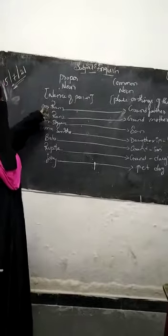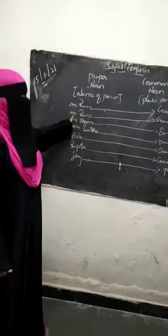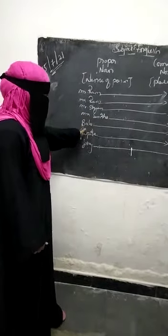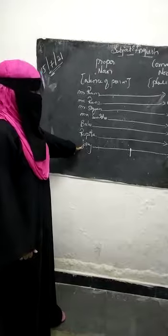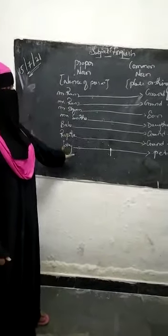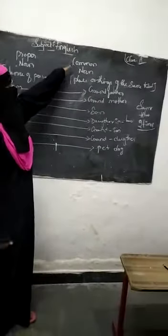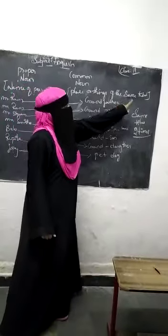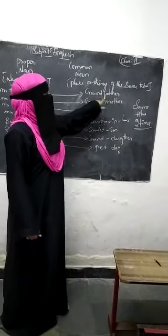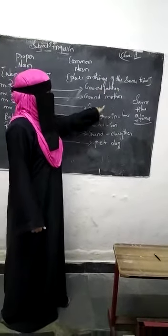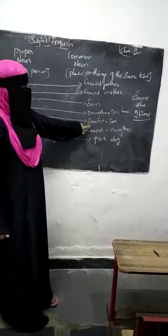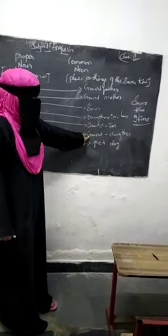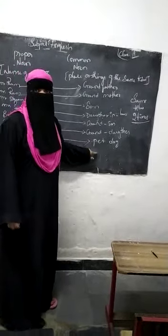Proper name of the person: Mr. Ram, Mrs. Ram, Mr. Shayan, Mrs. Sunita — this is the name of the person. Common noun: place and things of the same kind — grandfather, grandmother, son, daughter, grandson, granddaughter.